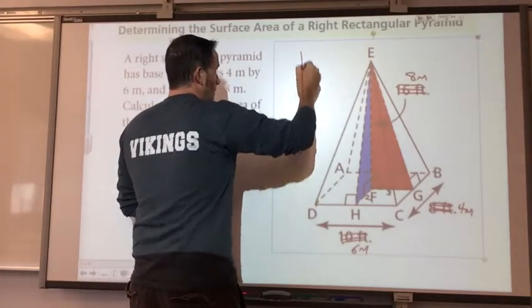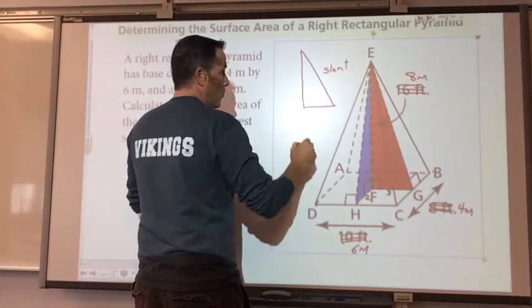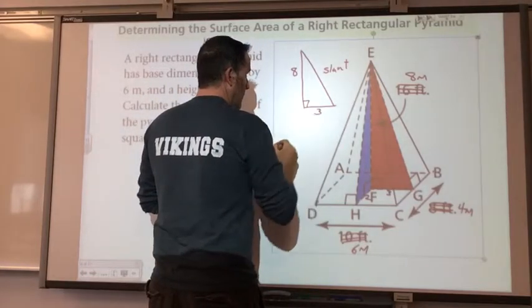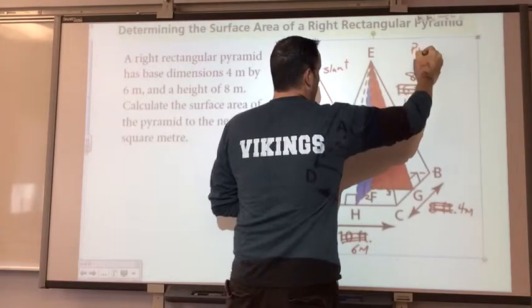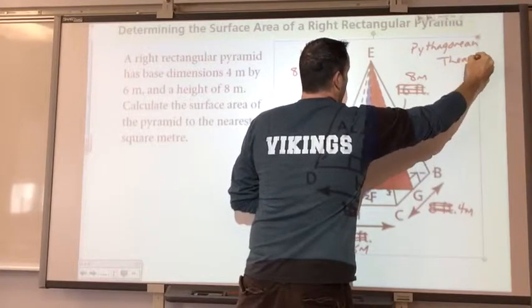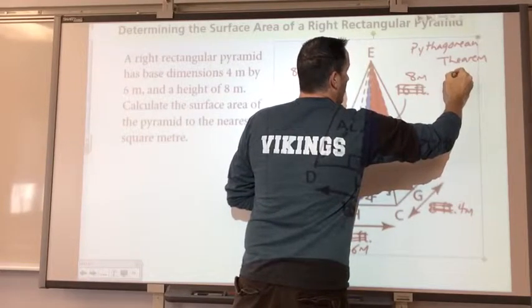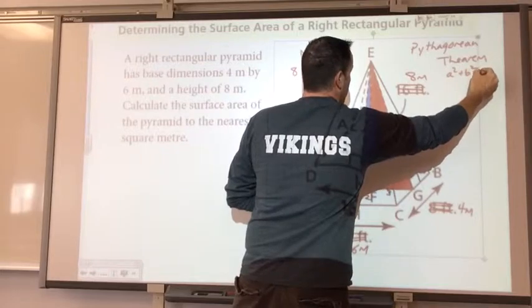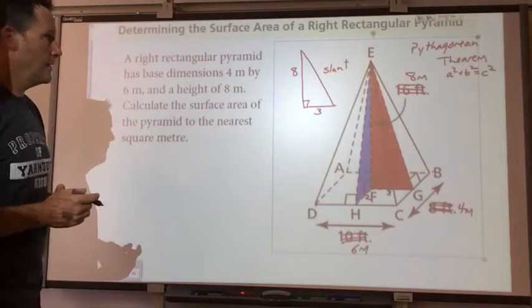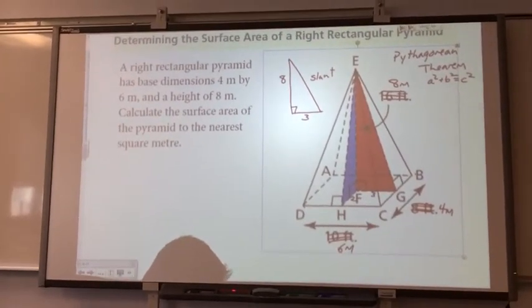I get a triangle, and I'm trying to find the slant height, where I know that I have a height of 8, and the base of my triangle is 3. And if you remember, we've got a thing called the Pythagorean Theorem, where A squared plus B squared equals C squared. I prefer to use side squared plus side squared equals hypotenuse squared.